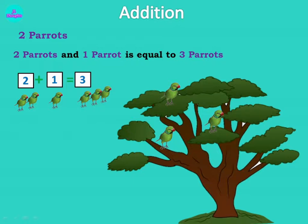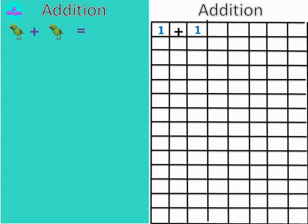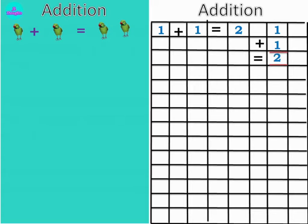Let's see a few more examples and also learn how to write in your books. Now how many parrots are here children? One parrot. So what number will you write? One plus. Now how many parrots are there? One more parrot. So plus one equals two. Now let's count: one, two. So one plus one is equals to two. And it can be written in vertical form also like this. One plus one is equals to two.